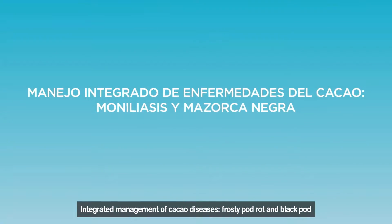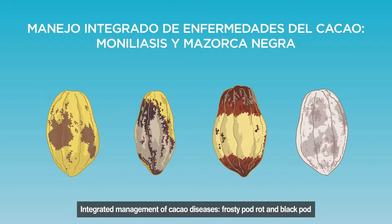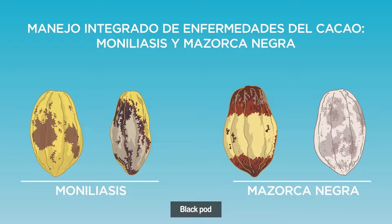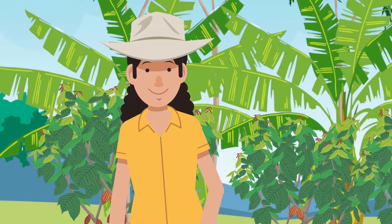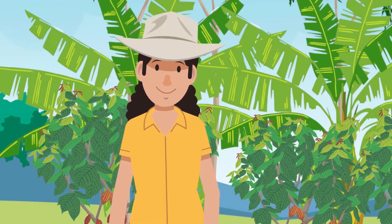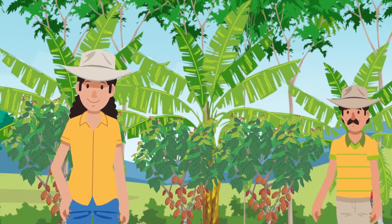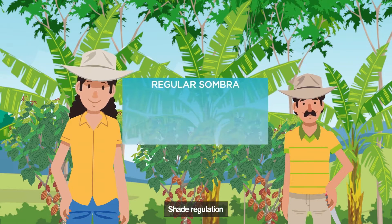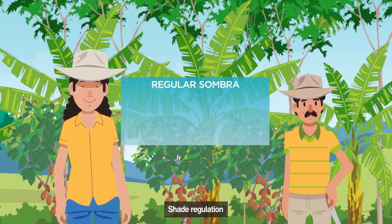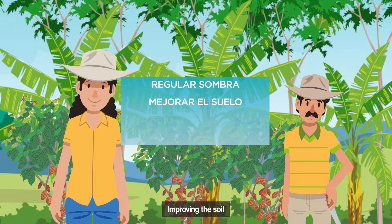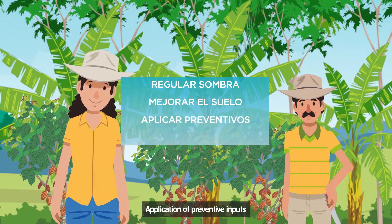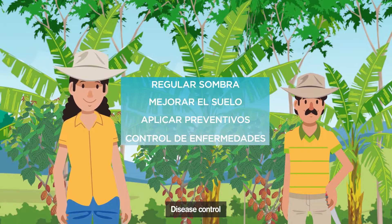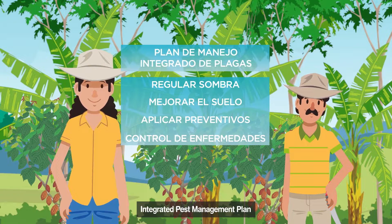In this animation, we'll focus on the integrated management of two important diseases: frosty pod rot and black pod. In agroforestry systems, integrated management consists of carrying out different tasks in the field, such as regulating the shade of other trees in the plantation, improving the soil, application of preventative inputs and disease control, as well as motivating the producer to implement the integrated management plan.